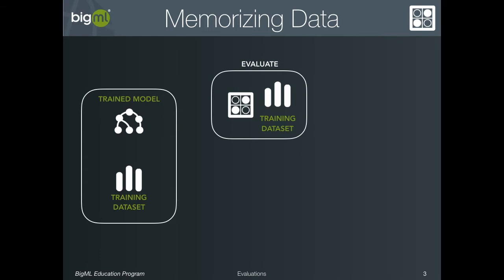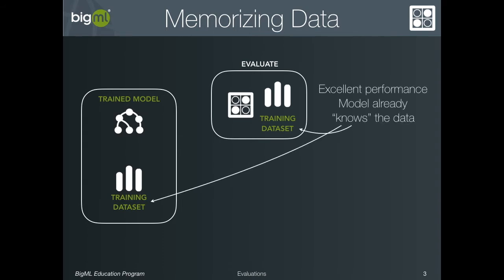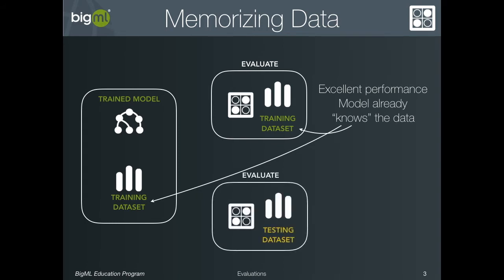Why is this? Many models are very good at memorizing training data, and thereby being able to make perfect predictions on the instances that it sees in training. Unfortunately, memorized training data almost never generalizes to good performance on data unseen in training, which is what you really care about. Thus, if you evaluate your model on its own training data, you often get an evaluation that overstates the performance of the model, which will lead to a lot of frustration when the model underperforms this expectation in production.